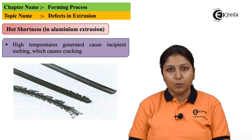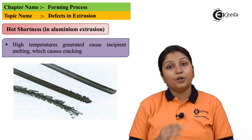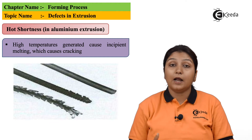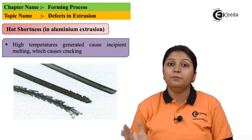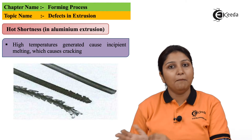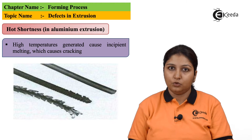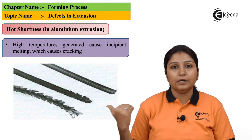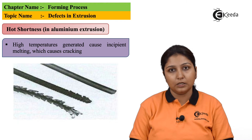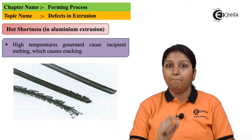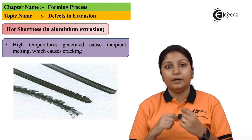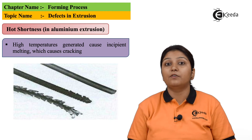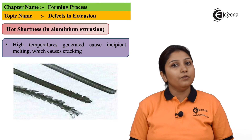The last defect is hot shortness. It generally occurs in aluminium. Due to high temperature, your material starts incipiently melting. In the diagram you can see that the material is melted or gets reduced in the final picture. This is generally what hot shortness is.